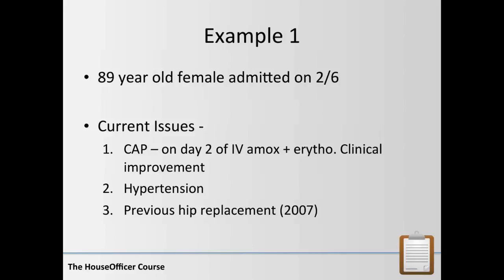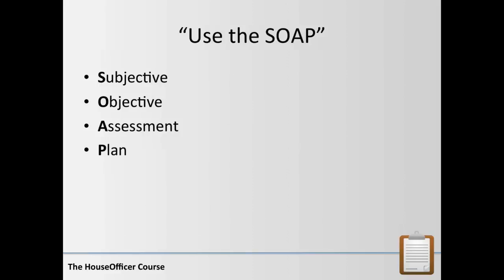Here's an example entry for a ward round. 89-year-old female admitted on the 2nd of June. Current issues: community-acquired pneumonia, day two of IV amoxicillin and erythromycin, clinical improvement. Background includes hypertension and previous hip replacement in 2007. Nice, concise, information-rich and up to date. We then go on to use SOAP: Subjective, Objective, Assessment, and Plan.